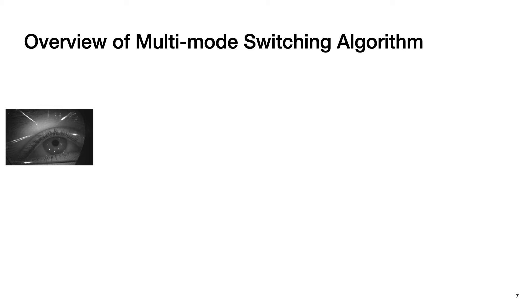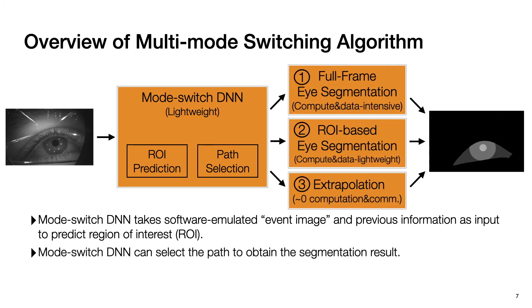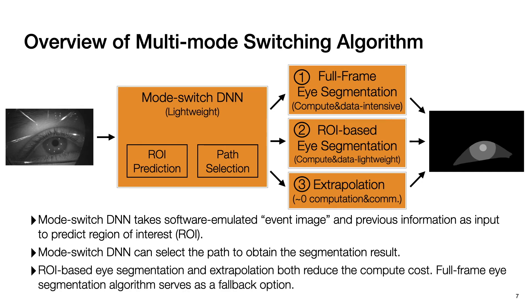With this key insight, we propose our multi-mode switching algorithm. It takes a software-emulated event image and previous information as input to predict ROI. We choose to emulate events instead of using an actual event camera so that no extra hardware is required. Although event cameras can operate at high speeds such as 10,000 Hz, such speed is usually overkill for consumer gaze tracking. In addition to predicting ROI, the multi-mode switching algorithm can also select the execution path for the rest of the pipeline. We have three different paths: ROI-based eye segmentation and extrapolation both reduce compute cost, and full-frame eye segmentation is used only as a fallback.